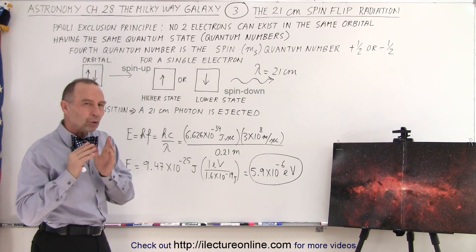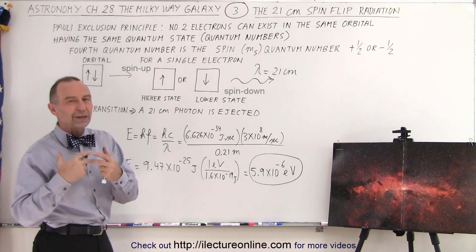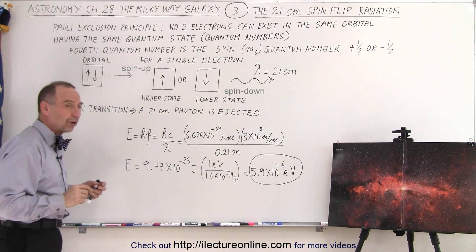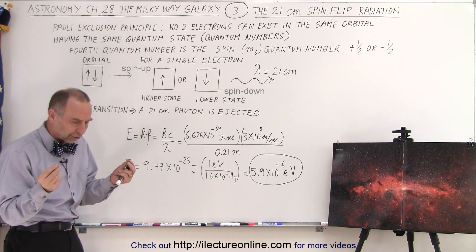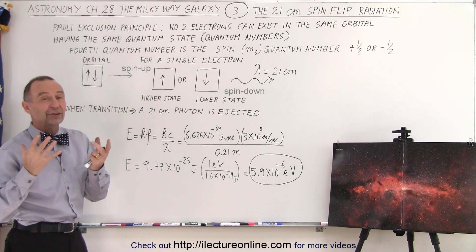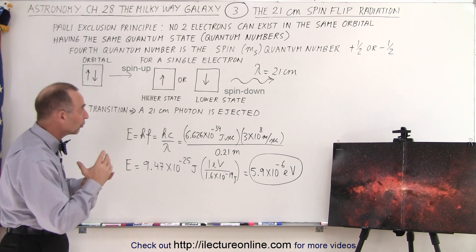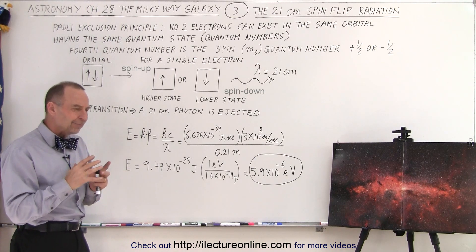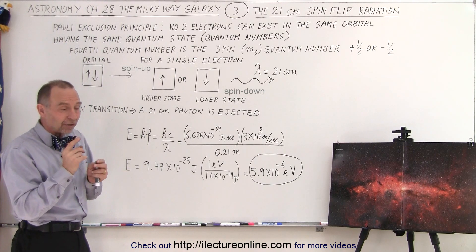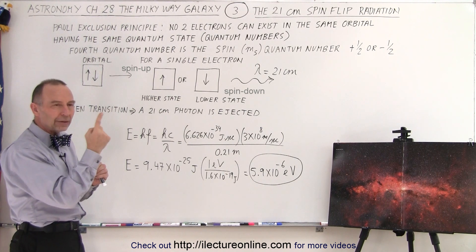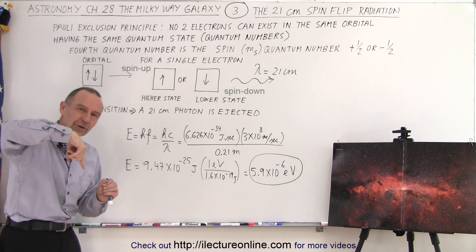And so the fourth quantum number is what we call the spin flip quantum number, because we realize that there are two places for two electrons in any orbital. So if two electrons can exist in that orbital, one of the quantum numbers must be different, and it's the fourth quantum number. Now the name is a little bit deceiving because electrons are point objects, so we can't really think of them as orbiting on their axis and flipping over.